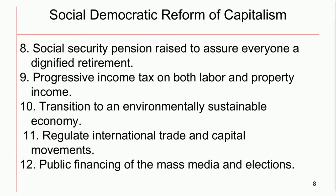Ninth, progressive income taxes on both labor and property income to pay for these programs. Tenth, transition to an environmentally sustainable economy by a big policy of public investment in green technologies and green energy. Eleventh, a new system of international trade and capital movements to regulate them in ways that will prevent driving down of wages from the pressure of competition among workers around the world. And twelfth, public financing of mass media and elections to make the system more democratic.